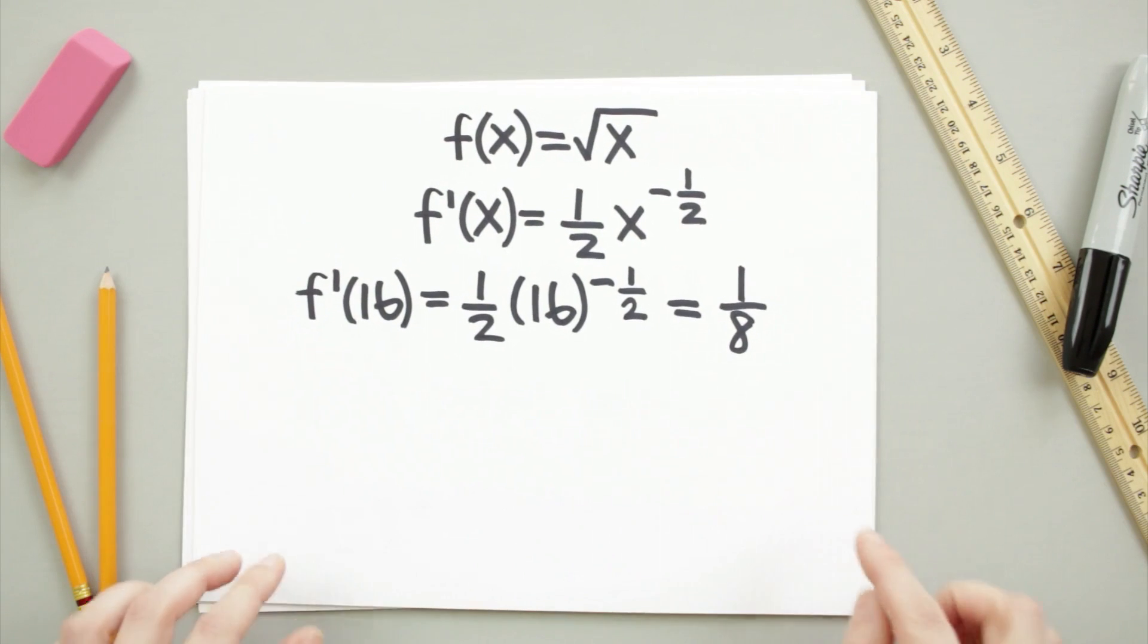The derivative of the square root function is equal to one-half x to the power of negative one-half. So at x equals 16, the slope of the tangent line is one-eighth.